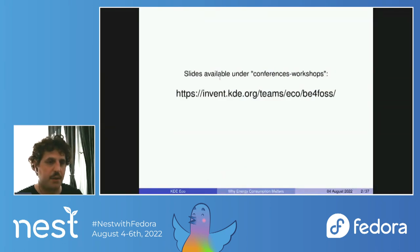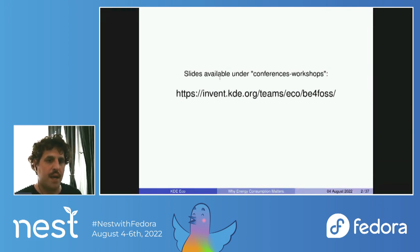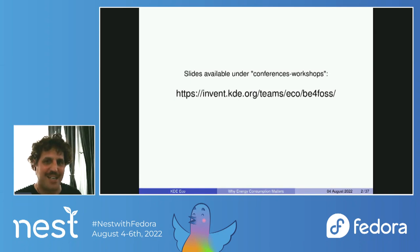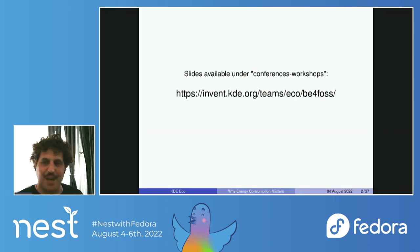Before we get started, there will be a lot of links and references in the talk. You're welcome to download the slides at our GitLab repository: invent.kde.org/teams/eco/BE-for-FOSS. There you will get links to many of the sources that I'm referencing today. I'm very distracted by chat, so I'm going to close it for now and open it back up at the end to answer questions and engage with the Fedora community.